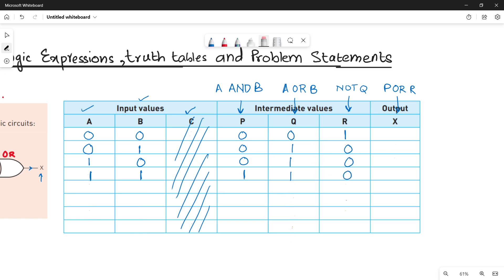And finally to calculate X, you will be having P and R and do an OR operation between them. This is P and this is R, so let's add them. 0 plus 1 is 1, 0 plus 0 is 0, 0 plus 0 is 0, 1 plus 0 is 1. So this is how you are going to calculate your final output.